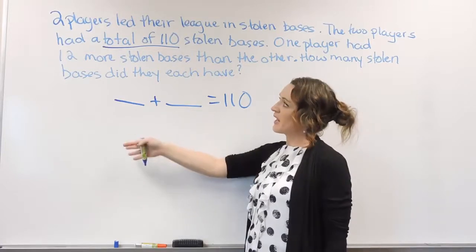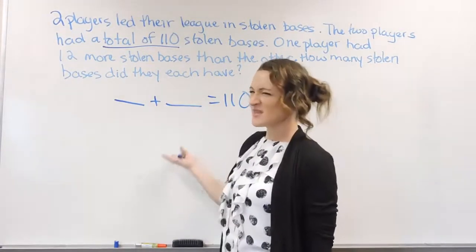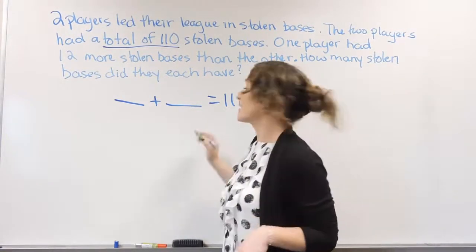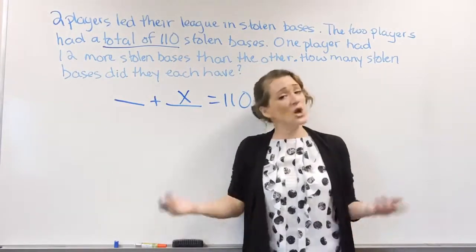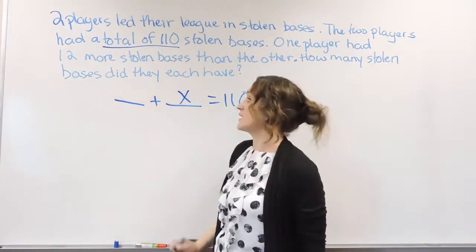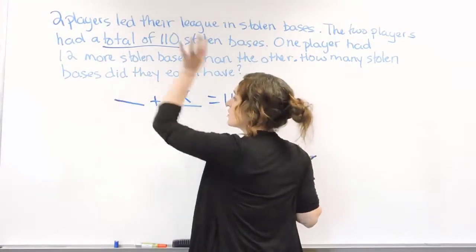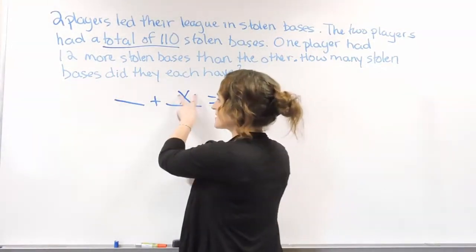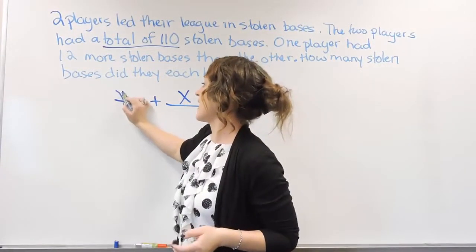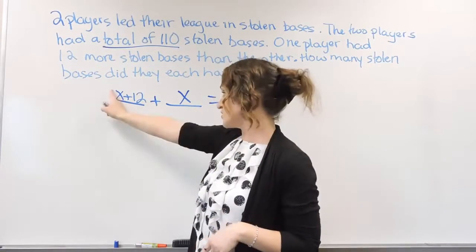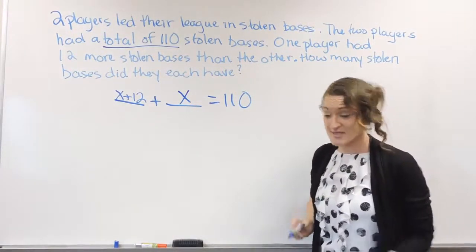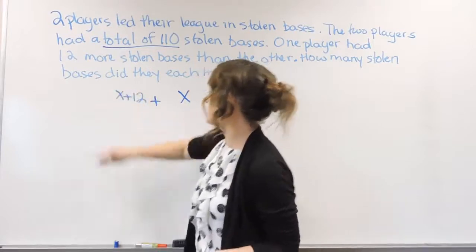One player had 12 more than the other. How much did the other have? It doesn't say anything about that. So the person that we know absolutely nothing about, let's call him our X — we have no idea. All we know about the other player is that he had 12 more than whatever X is. So this guy has X, and if I want 12 more bases than X, that's going to look like X plus 12. So this player has 12 more than the other one.